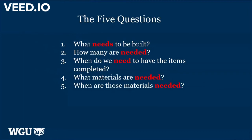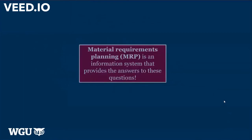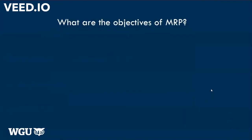So based on that, material requirements planning, by definition, is an information system that provides the answers to those five questions — what we need, when we need it, and based on that, decisions are made.